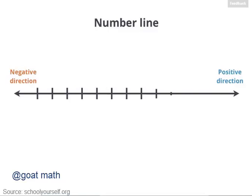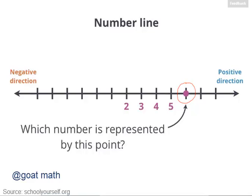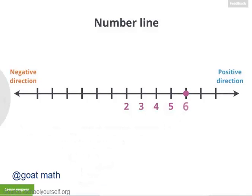You'll often see tick marks drawn on the number line, which usually indicate where the whole numbers are located. Let's draw a point at this tick mark. Suppose this point represents the number 2. If we move to the right, or in the positive direction, the numbers get bigger. So this point over here is 3, this point is 4, and this point is 5. This point over here represents the number 6.